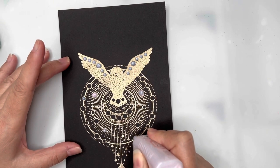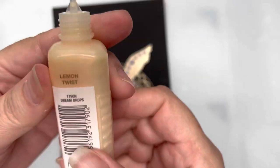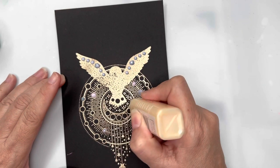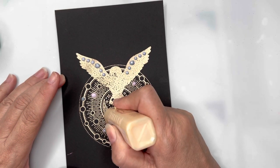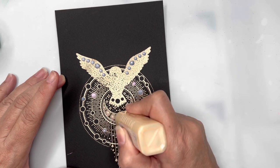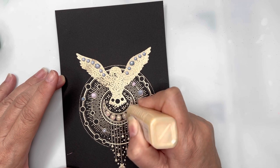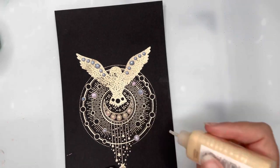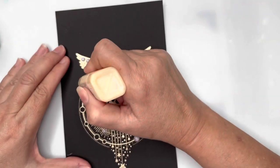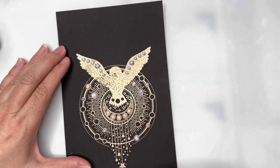This card here, I'm bringing in a selection of Nuvo Dream Drops and I'm showing you the different colors I'm using to go around and fill in the different sized circles within the images.